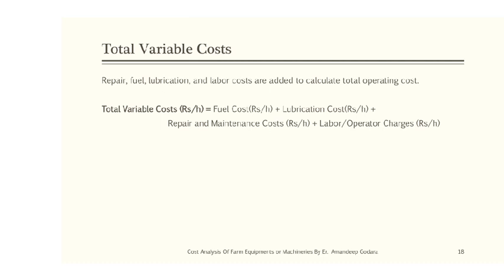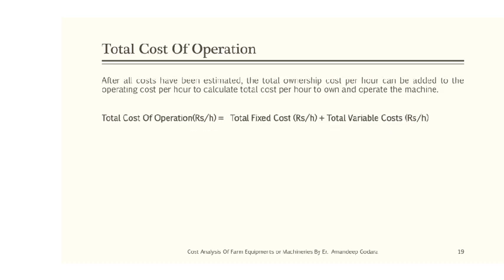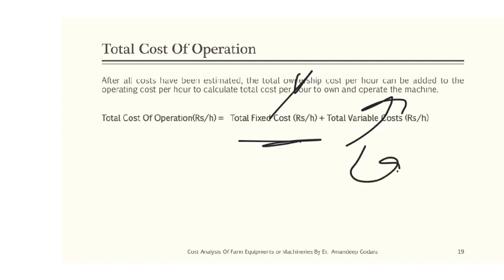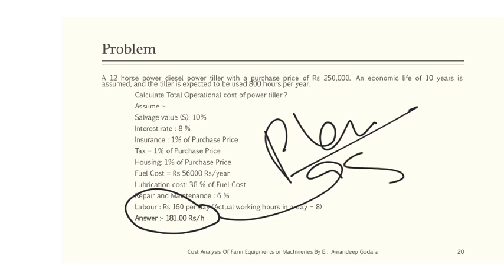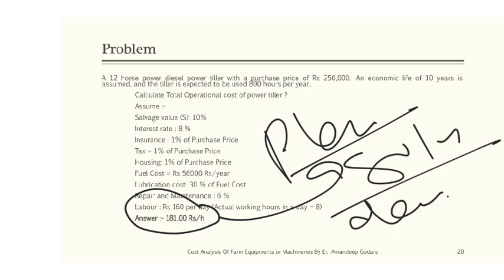Total variable cost is the sum of fuel cost, lubrication cost, repair and maintenance cost, and labor or operator charges. Total cost of operation equals total fixed cost plus total variable cost. There is a numerical problem as your assignment — please do it yourself and check your answer. If you face any problem with the solution, please download the solution PDF from the description of this tutorial.